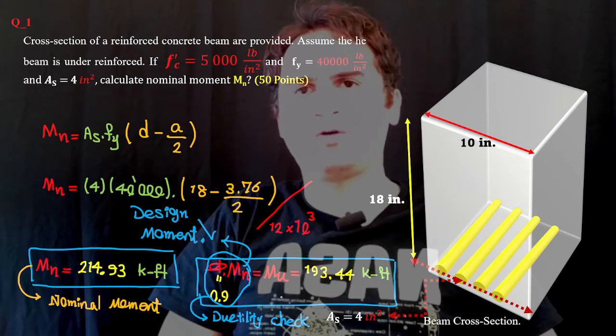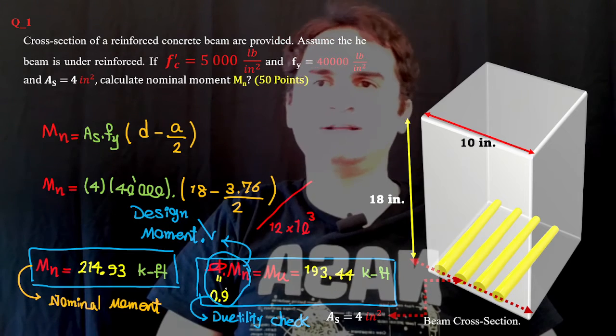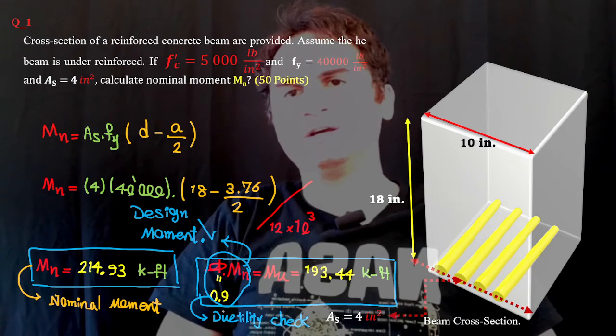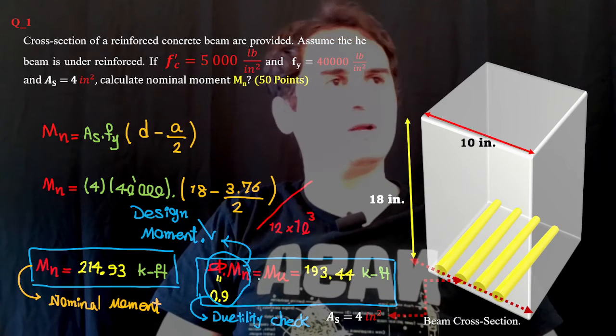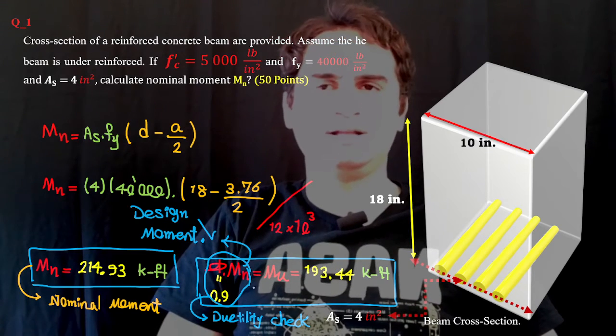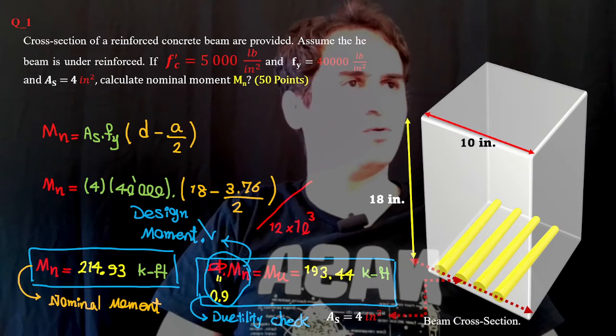The design moment M_u, or ultimate moment, is phi times M_n. That's 0.9 phi, if it's ductile. Phi of 0.9 for flexural members is multiplied by nominal moment, giving us a design moment of 193.4 kip-feet.